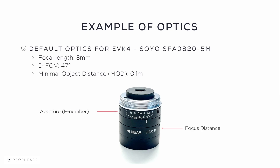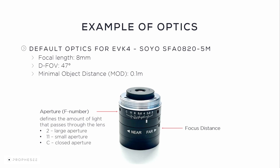This lens allows us to adjust the aperture and the focus distance, which isn't always possible on other types of lenses. The aperture defines the amount of light that passes through the lens to the sensor, and it's expressed as the F number, also called the F-stop. On this particular lens, the F number ranges from 2, a large aperture, to 11, a small aperture, and C means a closed aperture.